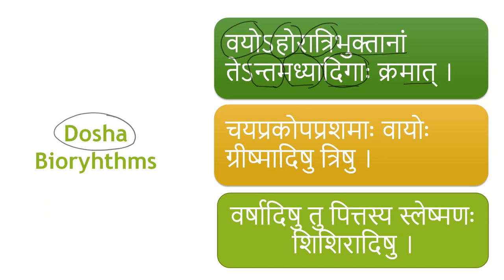Similarly, Chaya, Prakopha, and Prashamana — mild accumulation, aggravation, and return to normalcy — occur for each dosha in relation to the seasons: Grishma, Varsha, and Sharath. This cyclical variation applies across seasons; for instance, during summer the Sanchaya or Chaya of Vata takes place, during Varsha it gets aggravated, and during Sharathruthu it once again returns to normalcy. This Chaya-Prakopa-Prashama cycle is a rhythmical seasonal variation related to seasons like Grishma, Varsha, and Shishira.